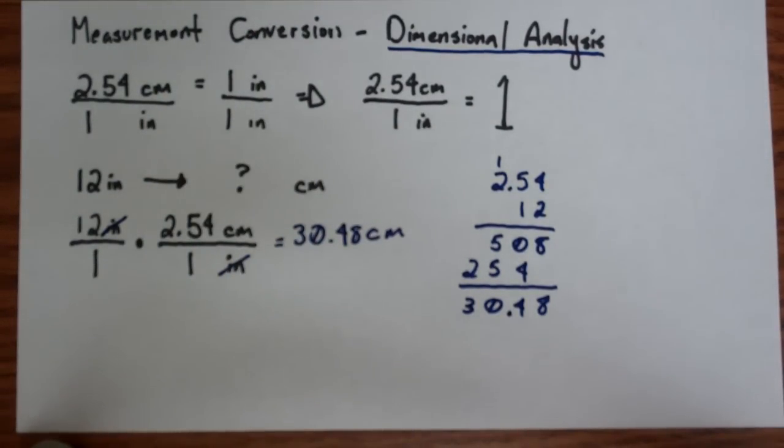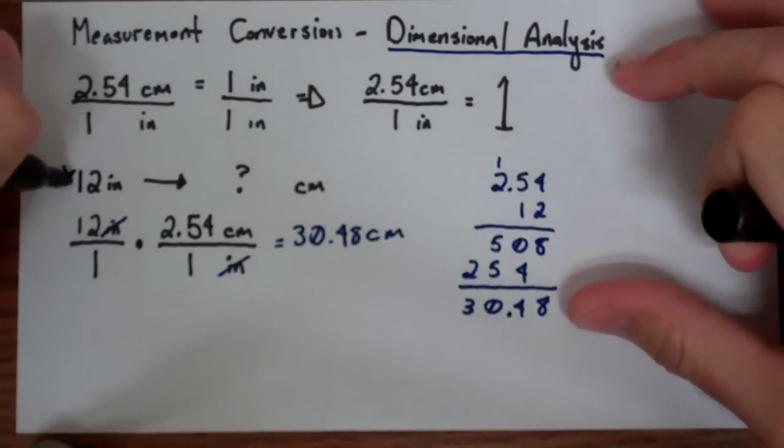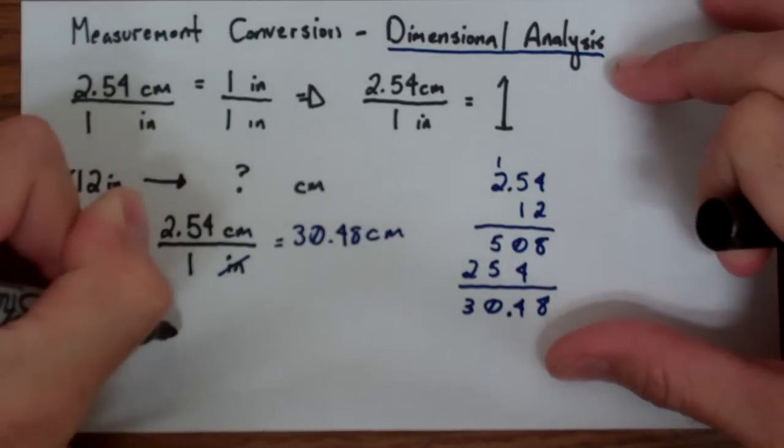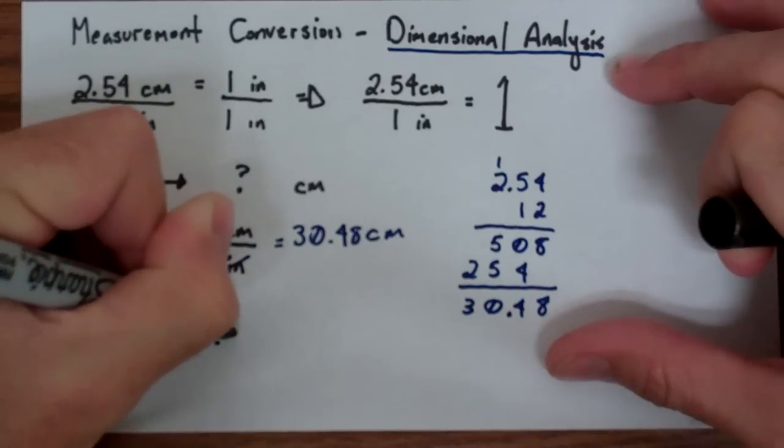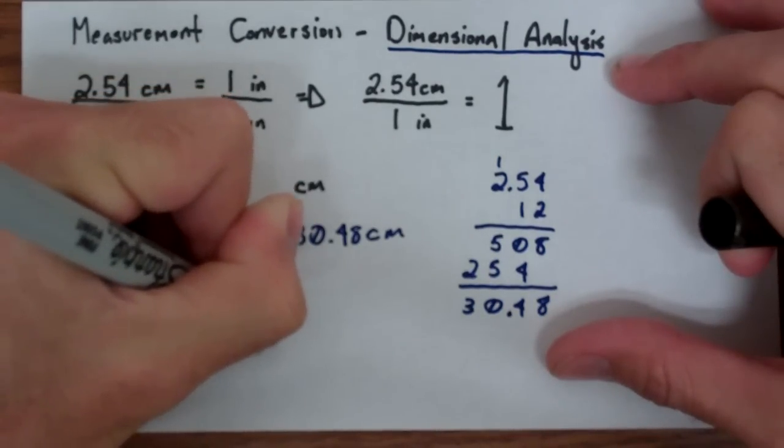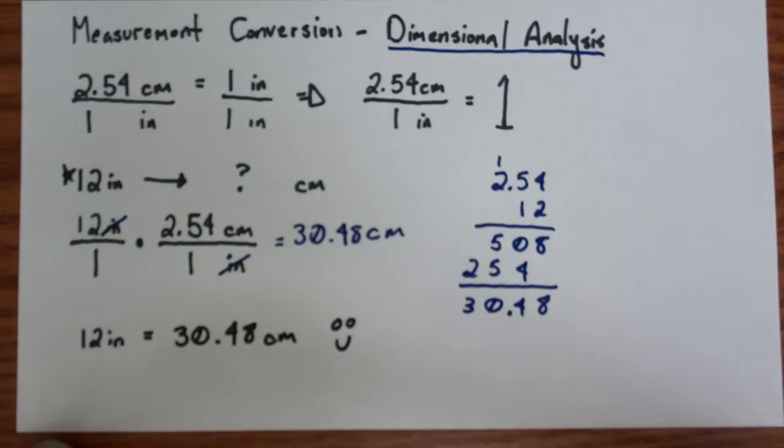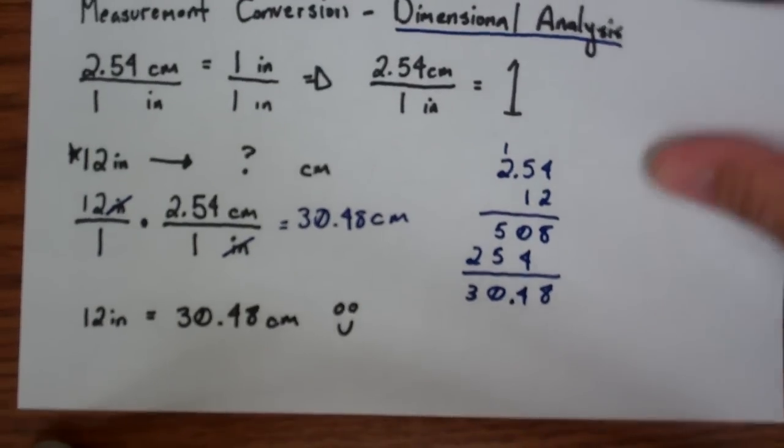So this means then that the answer to your question is that 12 inches equals 30.48 centimeters. And that makes us happy.